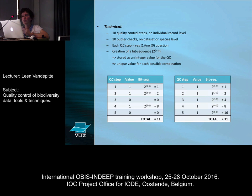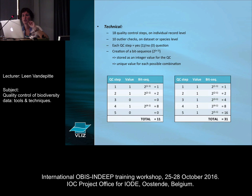What we do with all these yes and no's, or these zeros and ones, is we create a bit sequence. So we can store the full evaluation of the record as an integer value in the database. Each possible combination of those 28 checks is a unique value, so based on that unique value we can pull it apart again and check which steps it complies or doesn't comply to.